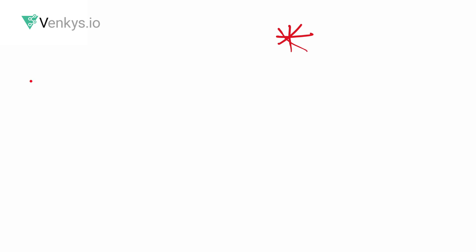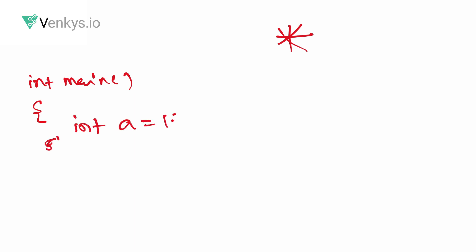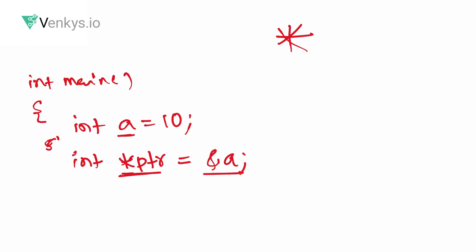In the same program, declare int a equals 10. You don't need a dereference operator for a plain variable because it is directly accessible. But if you want to access something referenced by a pointer, you use the dereference operator. Declare int* ptr — the asterisk prefix in the declaration means this variable stores an address, specifically the address of a.